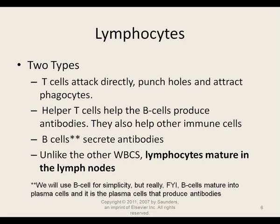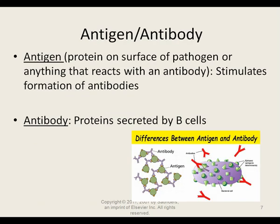B cells differentiate into plasma cells, and it's the plasma cells that actually produce the antibodies. For simplicity, we'll just refer to T cells and B cells. Lymphocytes mature in the lymph nodes. To understand specific immunity, you need to understand the difference between an antigen and an antibody. An antigen is a protein on the surface of a pathogen or any cell that reacts with an antibody. An antibody is a protein secreted by the B cell.